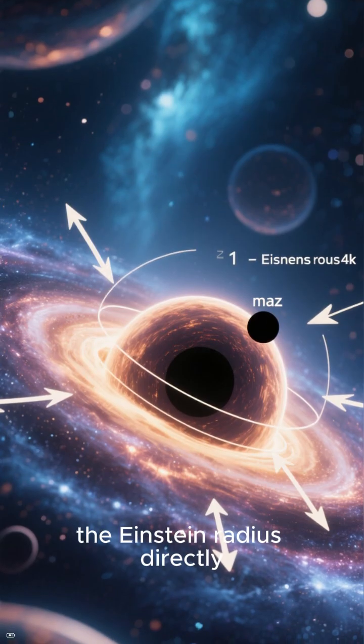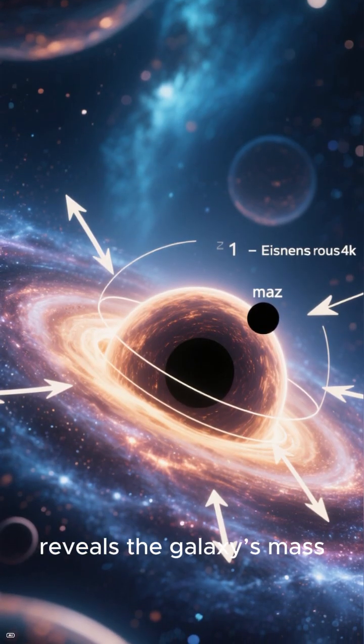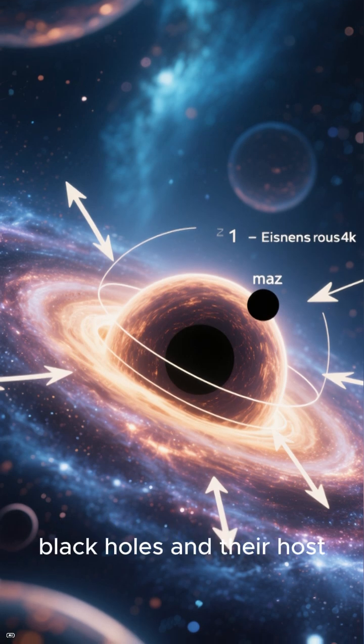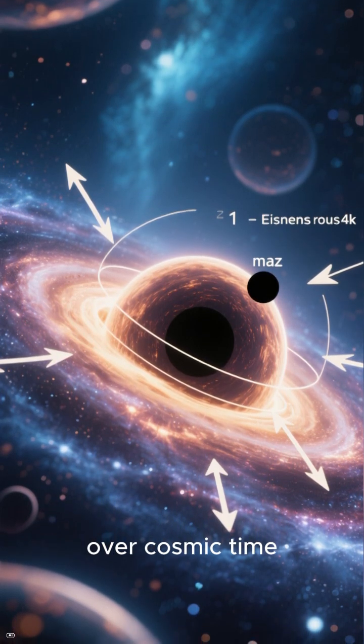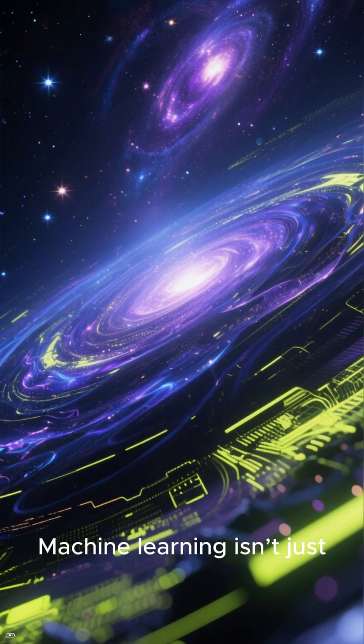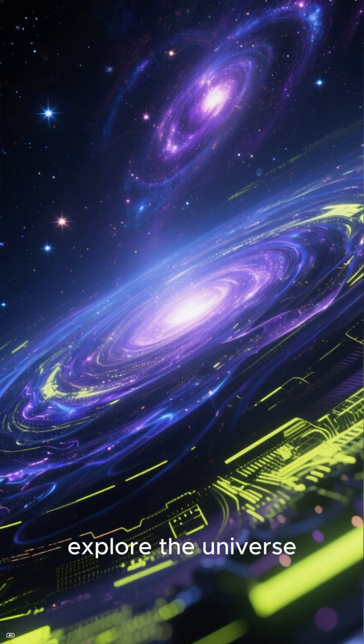With lensing, the Einstein radius directly reveals the galaxy's mass, helping us understand how supermassive black holes and their host galaxies evolve together over cosmic time. Machine learning isn't just finding patterns. It's reshaping how we explore the universe.